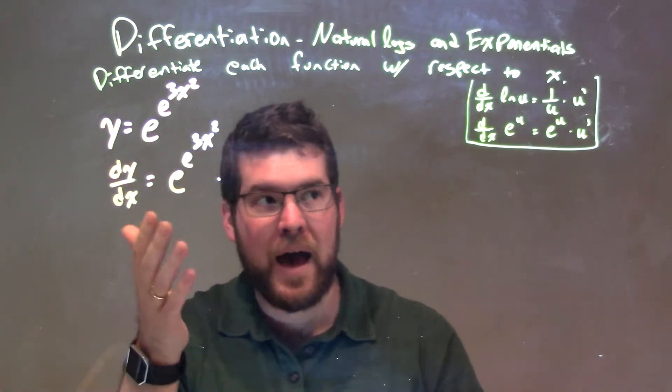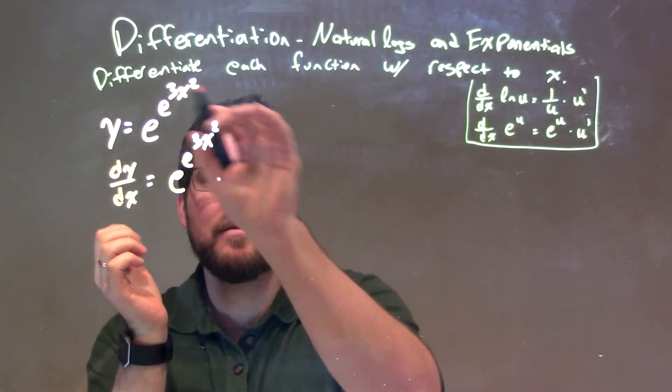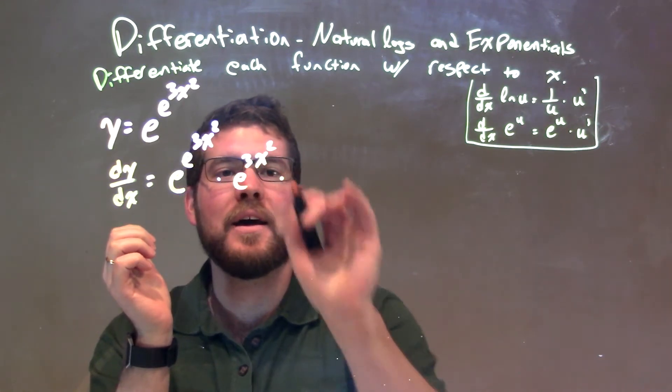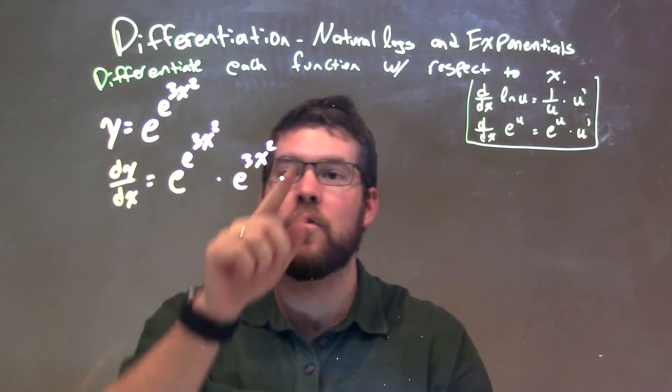So the derivative of that, e to the u, is just repeat. So repeat the exponent, e to the 3x squared, times the derivative of that exponent.